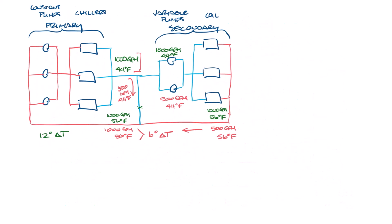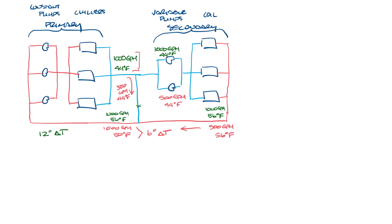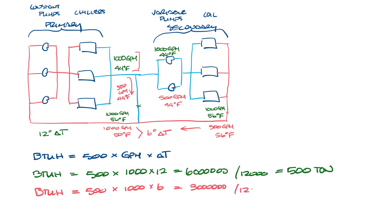So let's move this up a little. If we look at this in terms of BTU hours, BTU equals 500 times GPM times delta T. So for the first example, we'll have BTU equals 500 times 1,000 times 12, which is 6 million BTU. And if we divide that by 12,000, that gives us 500 tons. And for the low delta T example, we have BTU equals 500 times 1,000 times 6, and that's 3 million. We'll divide that by 12,000 and get 250 tons. So basically we're getting 250 tons of cooling out of our 500 ton chiller.